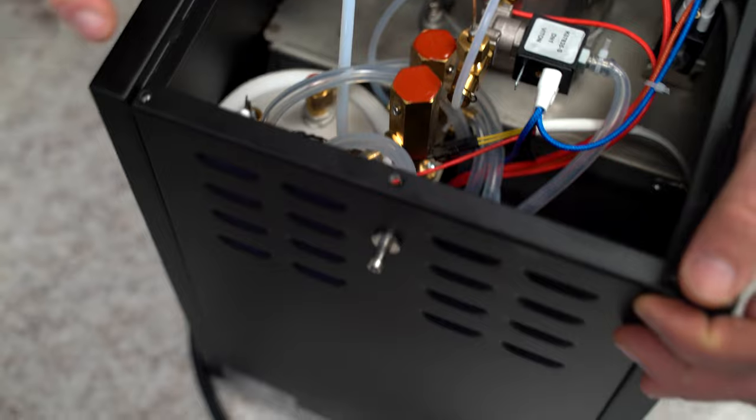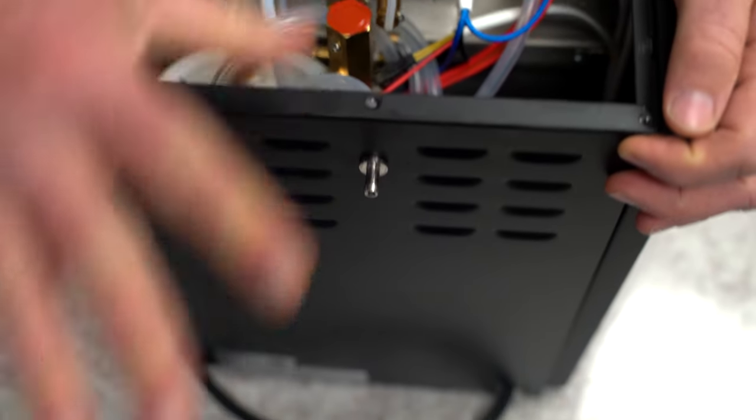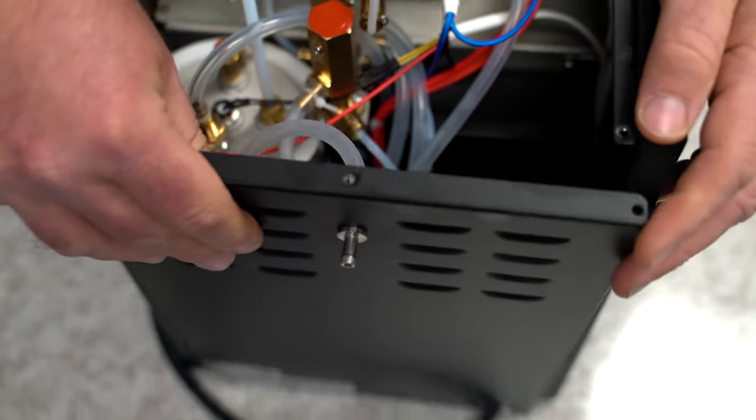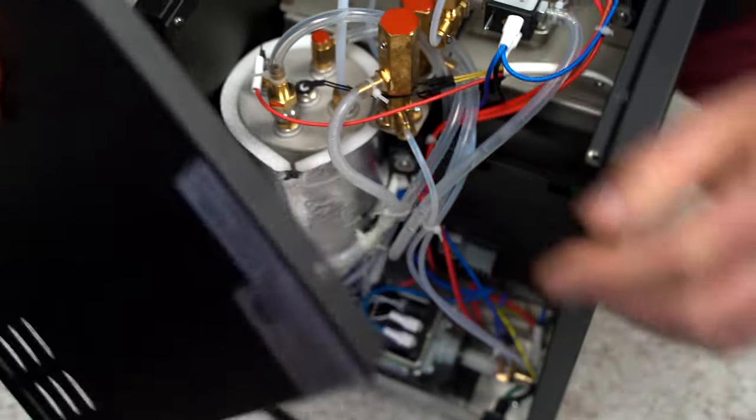To take off the top panel is really easy. It's three screws right here, and the top panel will slide right off. For the bottom panel, there are two screws, or for the back panel, there's two screws there.